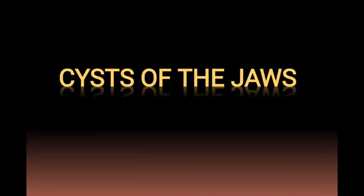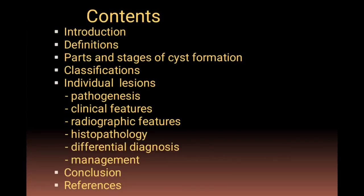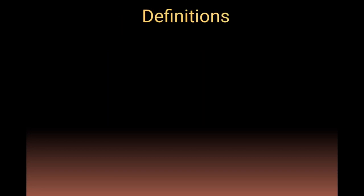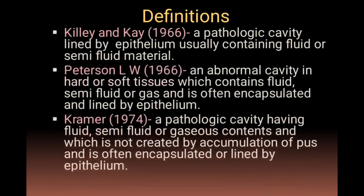Hello everyone, welcome back to another session in Dentistry and More. Today's session is about various cysts of the jaws, covering the definition of cysts, the parts and stages of cyst formation, classification, and details about lesions with regard to pathogenesis, clinical features, radiographic features, histopathology, differential diagnosis, and management. The word cyst is derived from the Greek word 'kystis,' meaning bladder or pouch, and it is the second most common pathological radiolucency in the jaw.